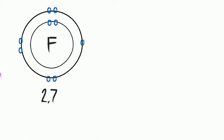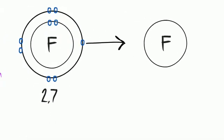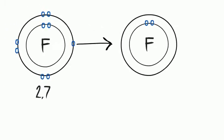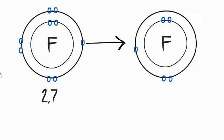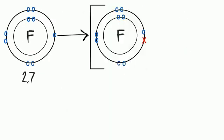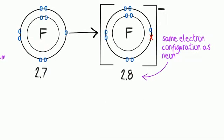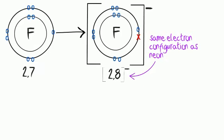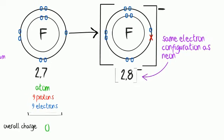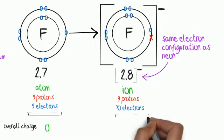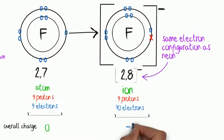Non-metal atoms gain electrons to become negatively charged ions. In this case, the fluorine atom has gained the electron from the lithium atom and has become a fluoride ion. The fluoride ion has the same electron configuration as neon. The fluorine atom has nine protons and nine electrons (overall charge zero), but the fluoride ion still has nine protons and now has ten electrons, giving an overall charge of minus one.